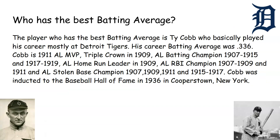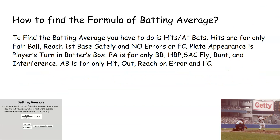How do you find the batting average? To find the batting average, you take hits over at-bats. Hits are credited when a fair ball reaches first base safely with no errors or fielder's choice. Plate appearance is a player's turn in the batter's box, which includes walks, HBP, sacrifice flies, bunts, and interference. At-bats count for hits, outs, reaching on an error, and fielder's choice.